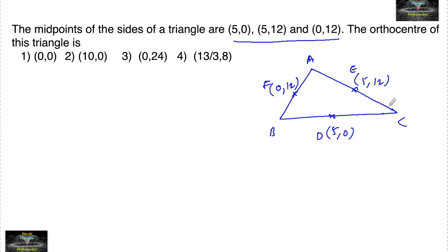And we can find the vertices of a triangle when the midpoints are given. The vertex C can be taken as (5+5-0, 0+0-0).